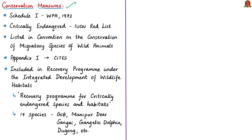The Great Indian Bustard has been protected in India since independence. Currently it has the highest protection status, listed in Schedule I of the Indian Wildlife Protection Act of 1972. It is listed as Critically Endangered in the IUCN Red List, listed in the CMS (Convention on the Conservation of Migratory Species of Wild Animals), and also listed in Appendix I of CITES.